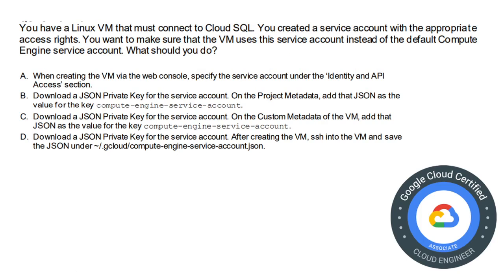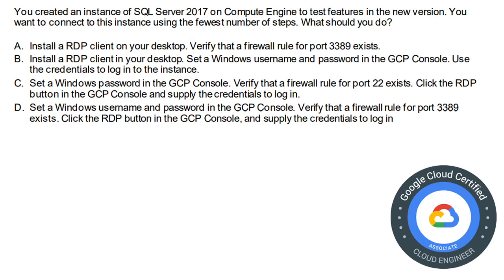Moving on to the next question. You have a Linux virtual machine that must connect to Cloud SQL. You have created a service account with appropriate access rights and want to make sure the VM uses that service account instead of the default Compute Engine service account. The options involve specifying the service account in the web console, or downloading a JSON private key in various ways. The correct answer is option A: when creating the VM via the web console, specify the service account under the identity and API access section.